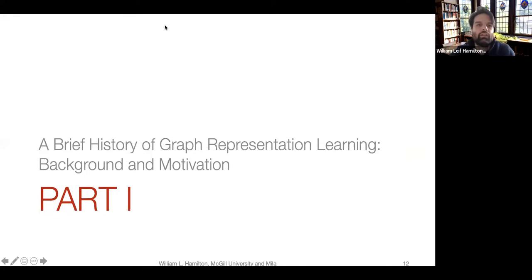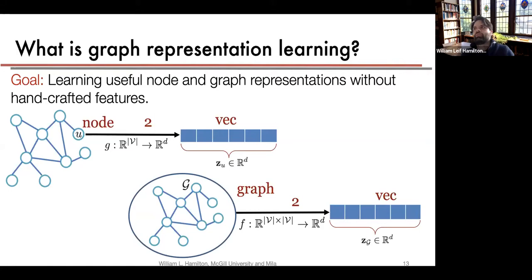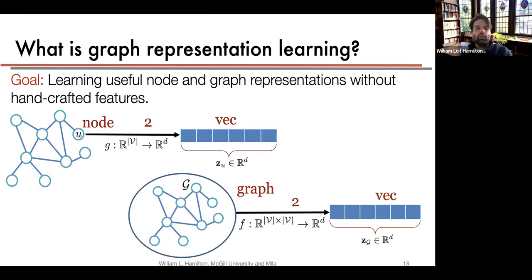Starting with a brief history and background: what distinguishes graph representation learning from general network analysis is that we're trying to go from graph structures to a low-dimensional vector representation — usually Euclidean, though there's interest in non-Euclidean spaces like hyperbolic spaces. You can think of this as mapping nodes to vectors, or mapping a graph to a vector — how can we map all nodes in an input graph to useful low-dimensional representations?